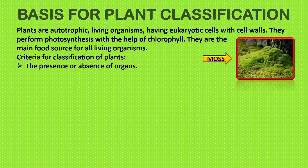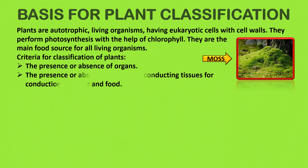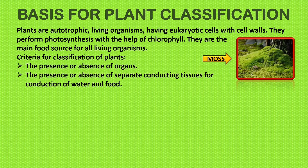The second criteria is the presence or absence of separate conducting tissues for conduction of water and food. We have low-level plants and very big plants like mango and banyan trees. The bigger plants have separate tissues for conducting food and water, and the smaller ones like moss don't have this.